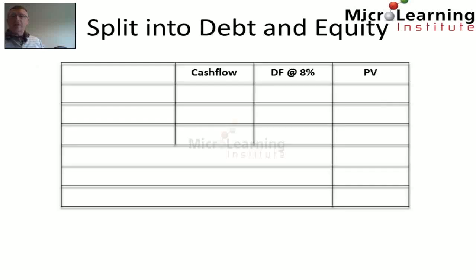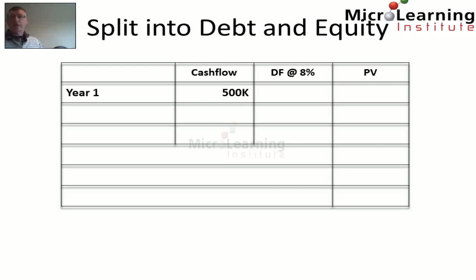Firstly, we look at the debt component and we see that the debt component valuation is determined from the present value of the future cash flows of the bond discounted at the market rate. The future cash flows in year 1 is $500k, derived from the $10 million valuation of the bond with a 5% coupon rate. So 5% of $10 million means that at year end, Bertrand will be providing cash of $500k to the recipient of the bond.